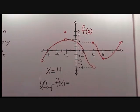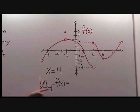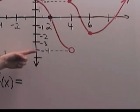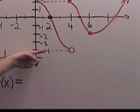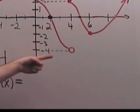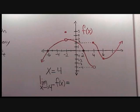Now let's compute the left and right limits of f at x equals 4. First, we do the left limit. We walk along the graph as x approaches 4 from the left and record the values on the graph. When we get to x equals 4, the y value is negative 4. Therefore, the limit as x approaches 4 from the left of f of x is equal to negative 4.